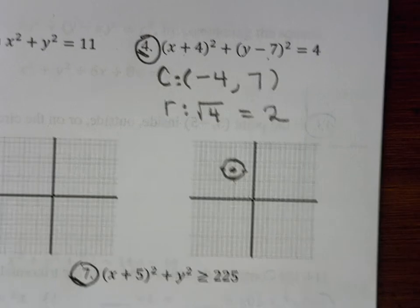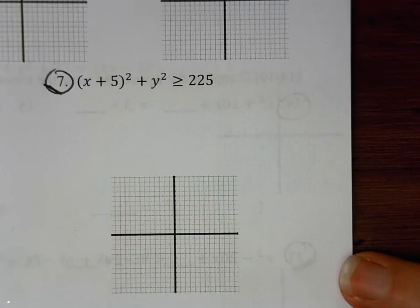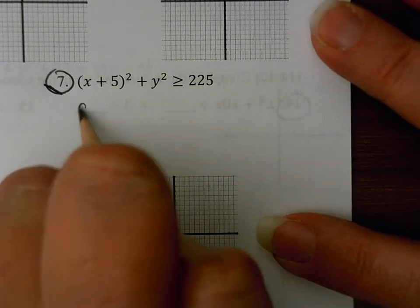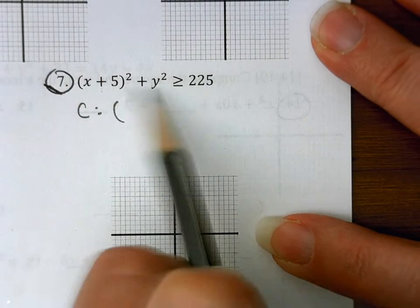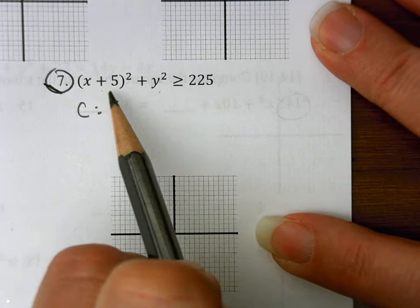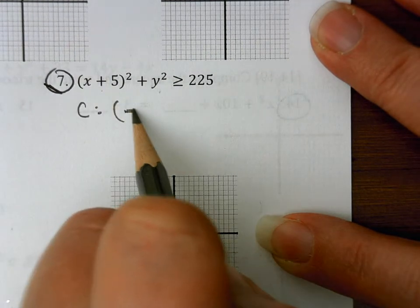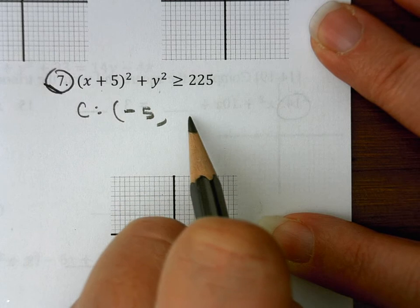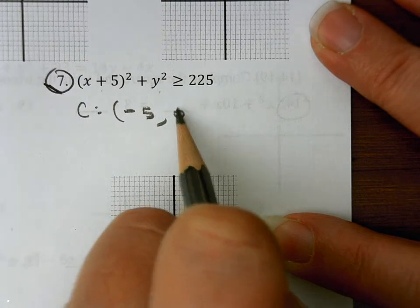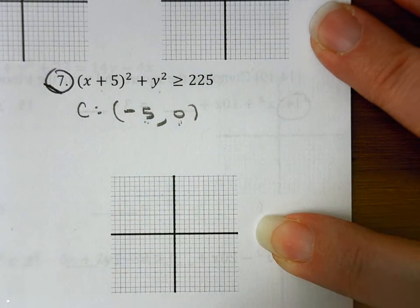Let's take a look at question number 7. I want to find my center and my radius first. For my center, going in alphabetical order, x before y — here I have x plus 5 squared, so my center would be at negative 5. I'm not adding or subtracting anything to the y, so the y would be 0. So my h, k would be negative 5, 0.